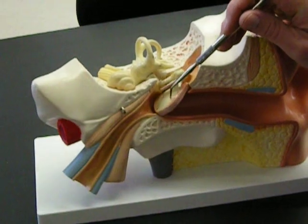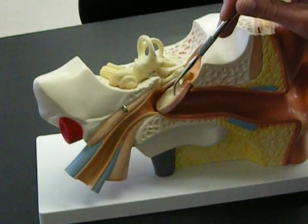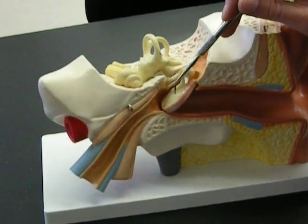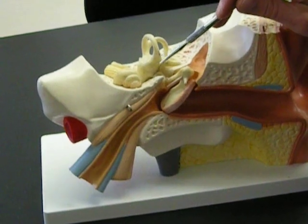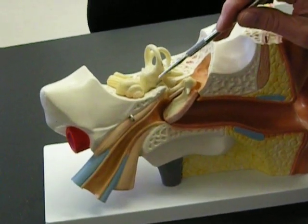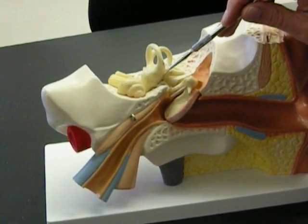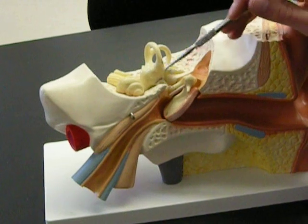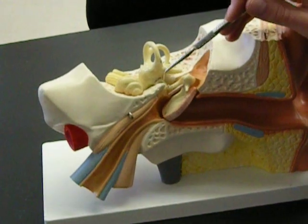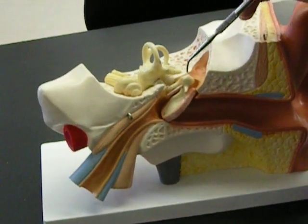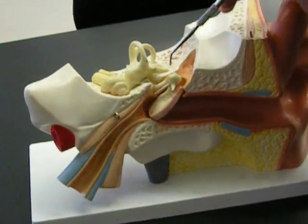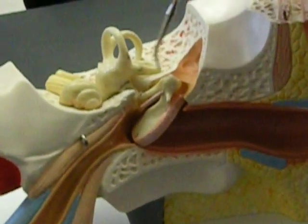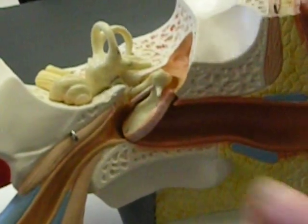On the medial side of the tympanic membrane, we are now in the middle ear, and this takes us all the way to another membranous structure called the oval window. This middle ear is where we have the three auditory ossicles: the malleus, the incus, and the stapes.